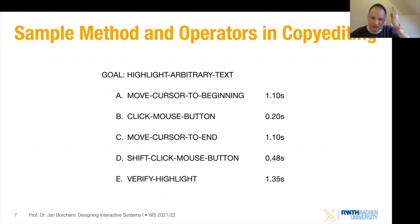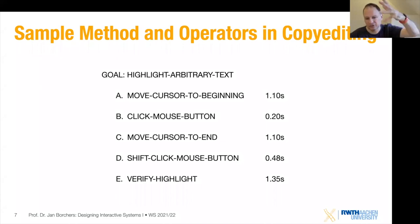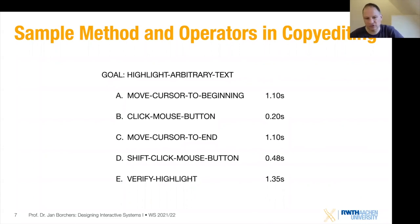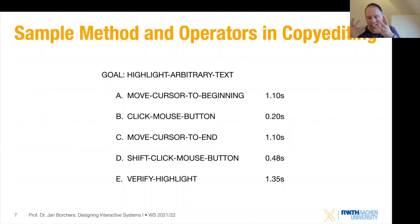That's the basic story with GOMS. We break the goal down into methods, sub-methods, and so on, until we end up with operators at the leaves of the tree. Selection rules in between tell us how often which method gets chosen. Then we go back up and add up the execution times, and we know how long the task is going to take.